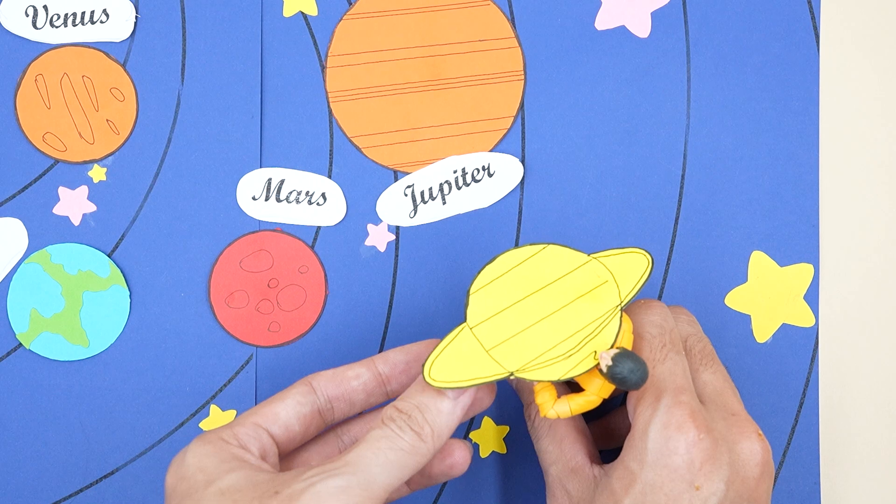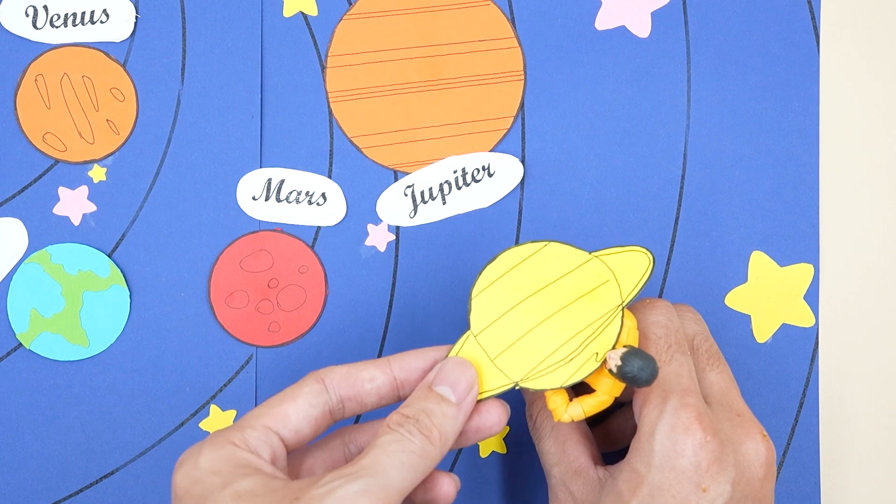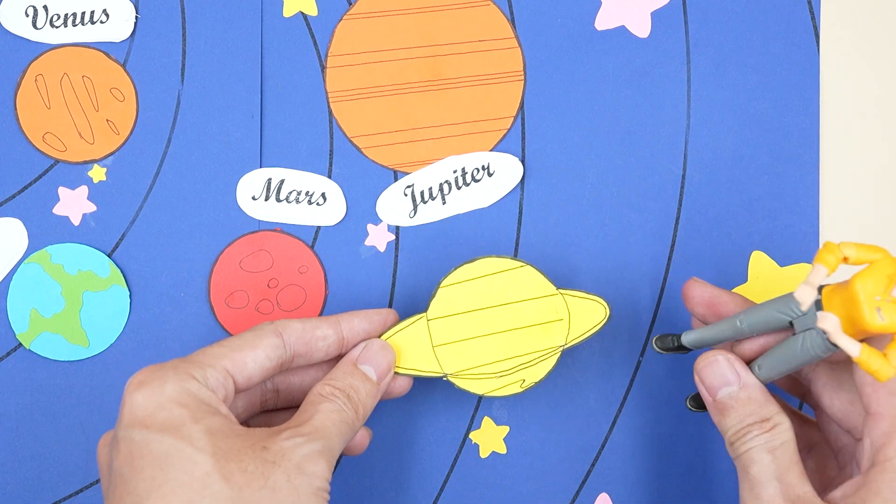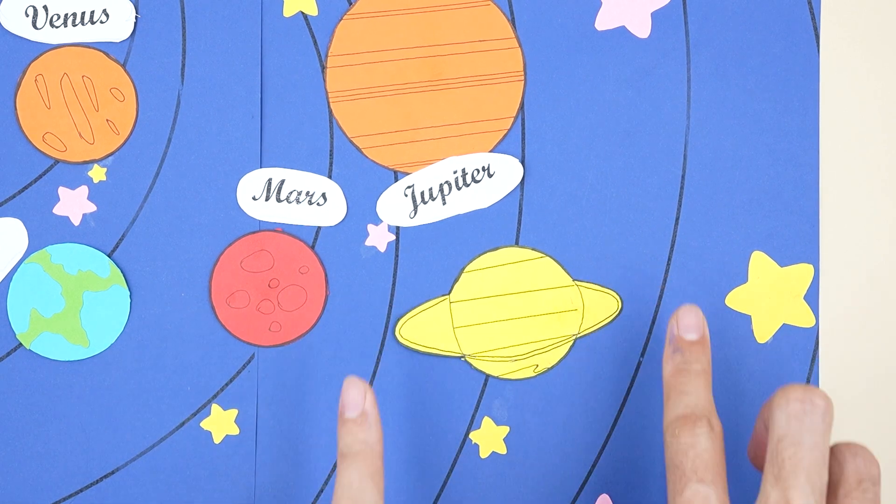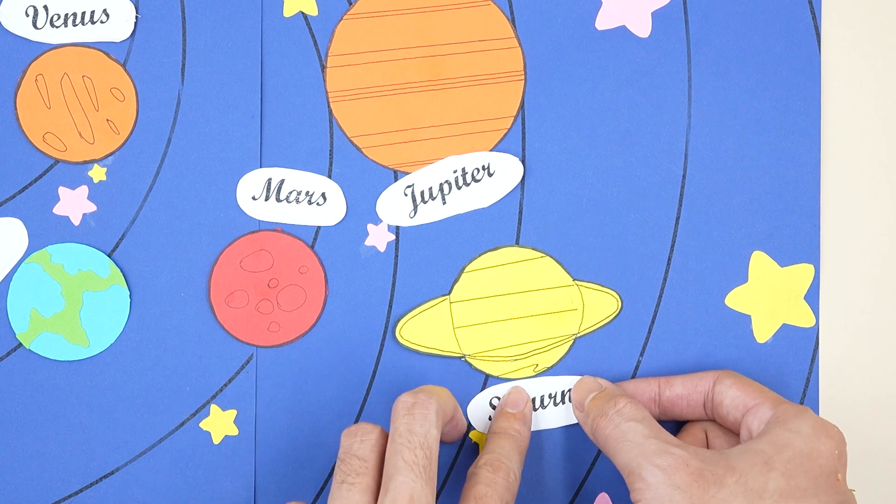Okay, thank you. Let me put Saturn down for you. This is the sixth star in the solar system. Now add the word Saturn next to it and you're done.